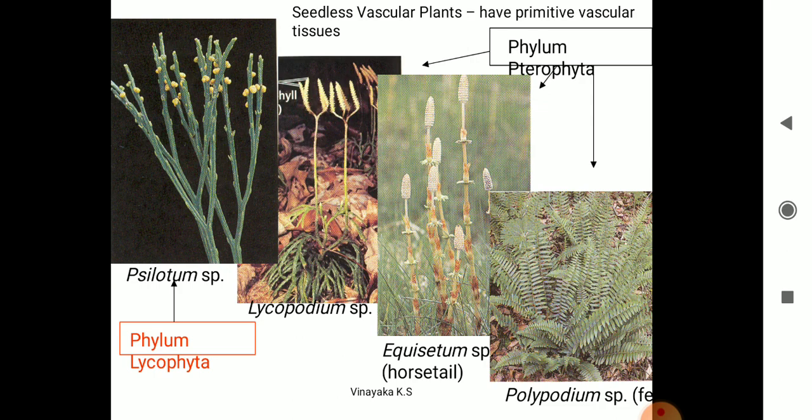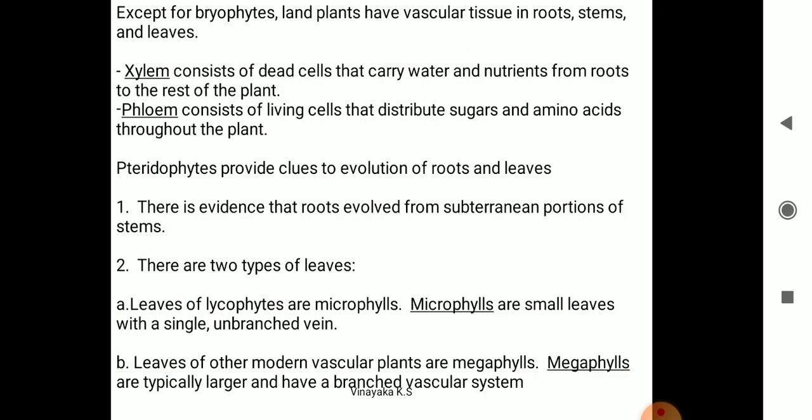Another characteristic is that pteridophytes have vascular tissue — conducting tissues. The conducting tissues present are xylem and phloem. Xylem consists of dead cells that carry water and nutrients from the root to the rest of the plant. Phloem consists of living cells that distribute sugars and amino acids throughout the pteridophyte.